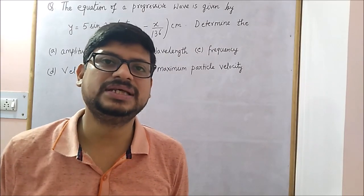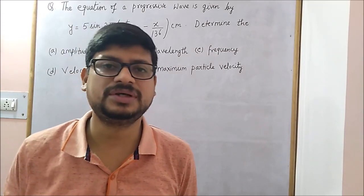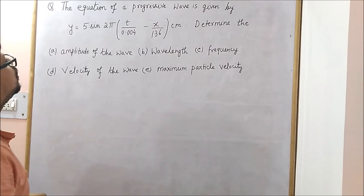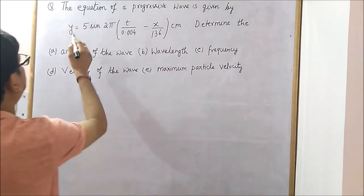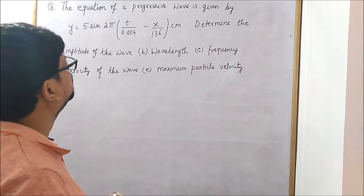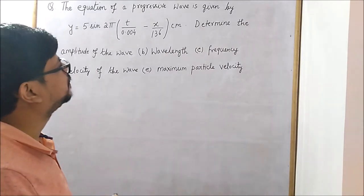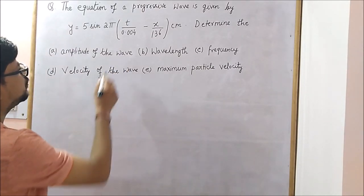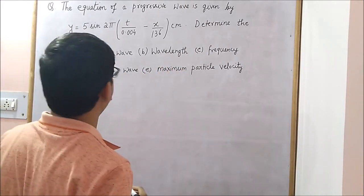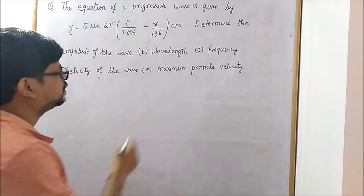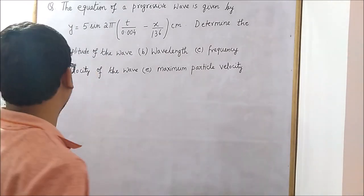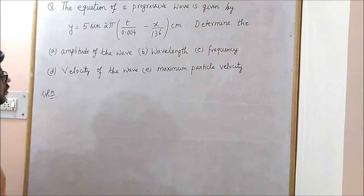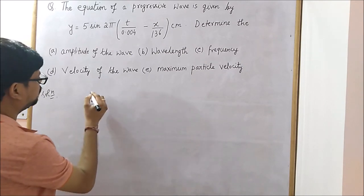In this class we shall see some simple problems on waves. Here is our first problem. The equation of a progressive wave is given by y equal to 5 sine of 2 pi t by 0.004 minus x by 136 centimeter. Determine: a) amplitude of the wave, b) wavelength, c) frequency, d) velocity of the wave, and e) maximum particle velocity.